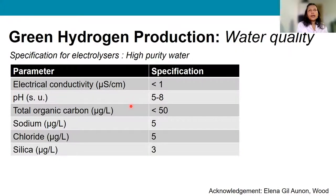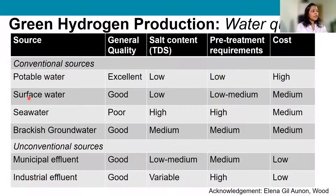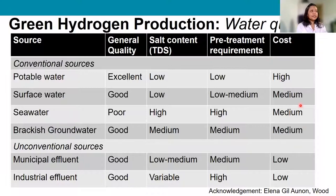When considering seawater and wastewater as sources, water quality must meet specific requirements for the electrolyzers in terms of conductivity, pH, total organic carbon, salt content, and silica. Different water sources may require different treatment, and there is a cost associated with each source that needs to be considered.